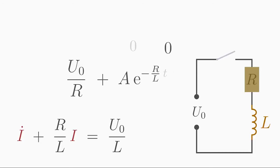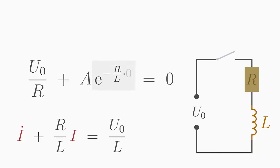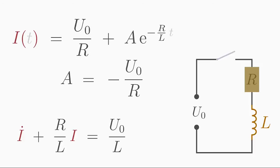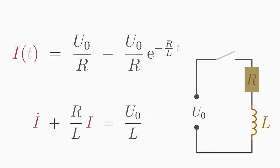Insert it into the general solution. E to the power of zero equals 1. Solve for A and you get A equals minus U0 over R. Thus we have successfully determined the specific general solution.